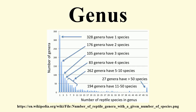In binomial nomenclature, the genus name forms the first part of the binomial species name for each species within the genus. For example, Felis catus and Felis sylvestris are two species within the genus Felis. Felis is a genus within the family Felidae.